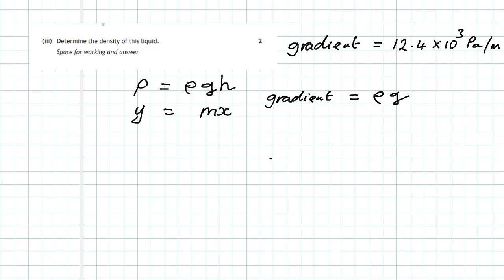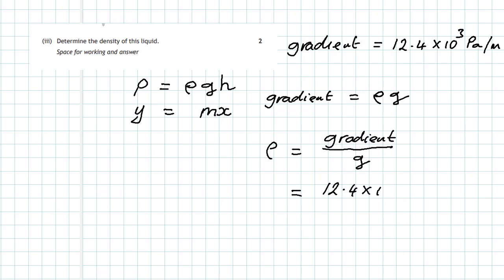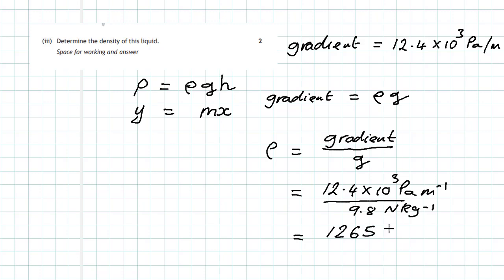To find the density of the liquid, the density equals the gradient divided by g. Substituting: density equals 12.4 times 10 to the power 3 pascals per metre, divided by g equals 9.8 newtons per kilogram. Calculating this gives 1265, which we can express as 1.27 times 10 to the power 3 kilograms per metre cubed.